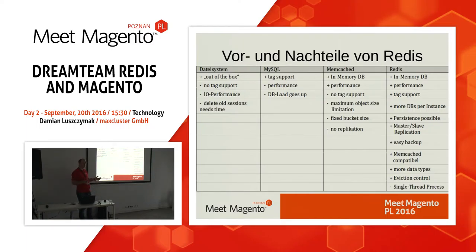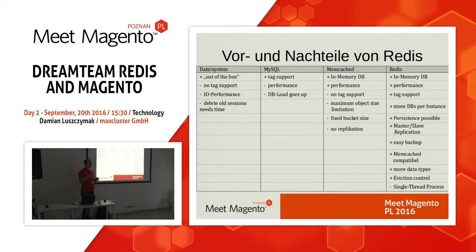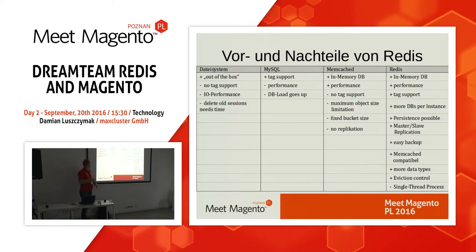Then we have Memcached — also an in-memory database with good performance, but no tag support and a maximum object size limit. For clean Magento that's not a problem, but extensions like Manadev layered filter can produce objects bigger than Memcached allows. Also no replication. Our winner for this presentation is Redis: in-memory, high performance, tag support, multiple databases per instance, persistent storage, master-slave replication, easy backups, and Memcached-compatible.